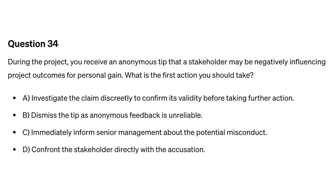Question thirty-four. During the project, you receive an anonymous tip that a stakeholder may be negatively influencing project outcomes for personal gain. What is the first action you should take? A. Investigate the claim discreetly to confirm its validity before taking further action. B. Dismiss the tip as anonymous feedback is unreliable. C. Immediately inform senior management about the potential misconduct. D. Confront the stakeholder directly with the accusation.